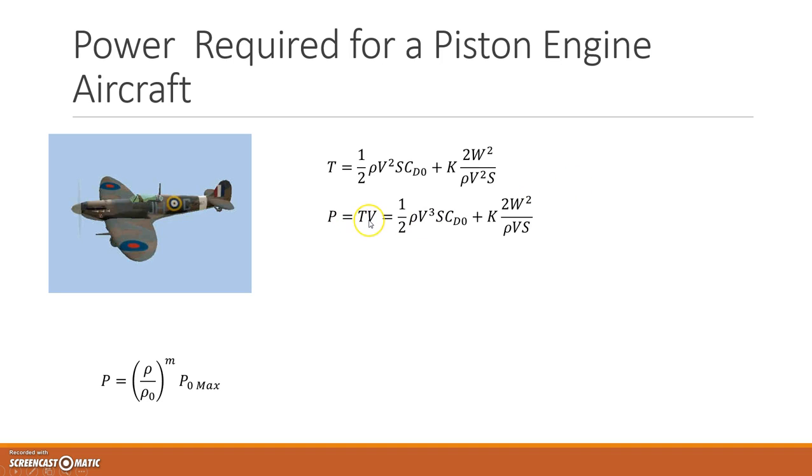The power then is just the thrust multiplied by the velocity, so V squared becomes V cubed and this V squared becomes V, multiplying both sides by V.